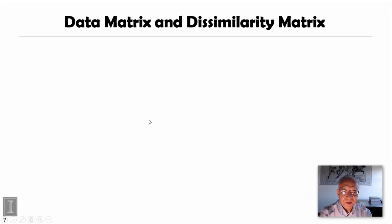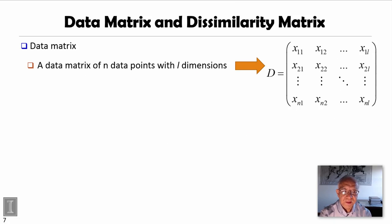So we first introduce data matrix and dissimilarity matrix, or distance matrix. Data matrix is represented in the typical matrix form. We have n data points, we use n rows. We have l dimensions, we use l columns to represent this data set.